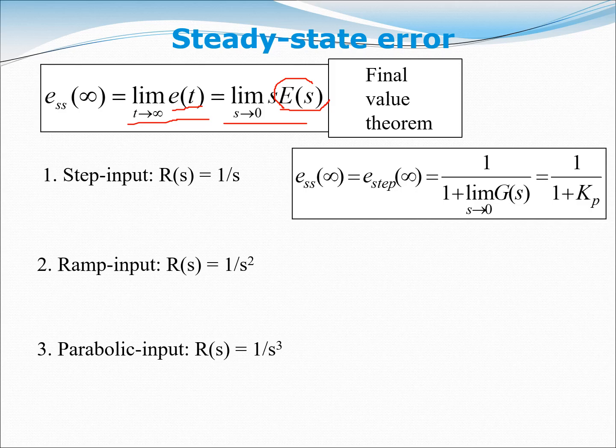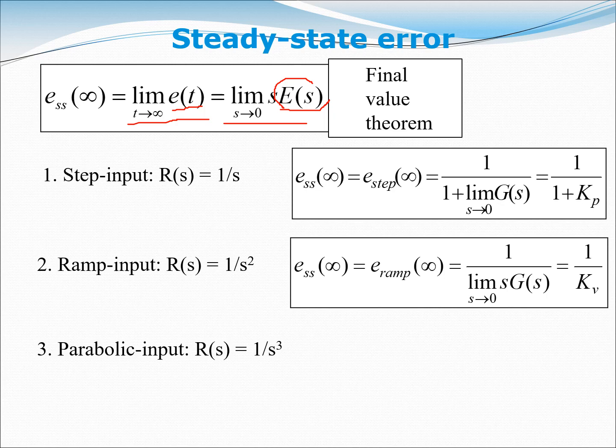For the step input, R(s) equals one over s. The steady state error is equal to one over one plus the limit as s goes to zero of G(s), which simplifies to one over one plus Kp. This is the formula for steady state error when a step input is applied.